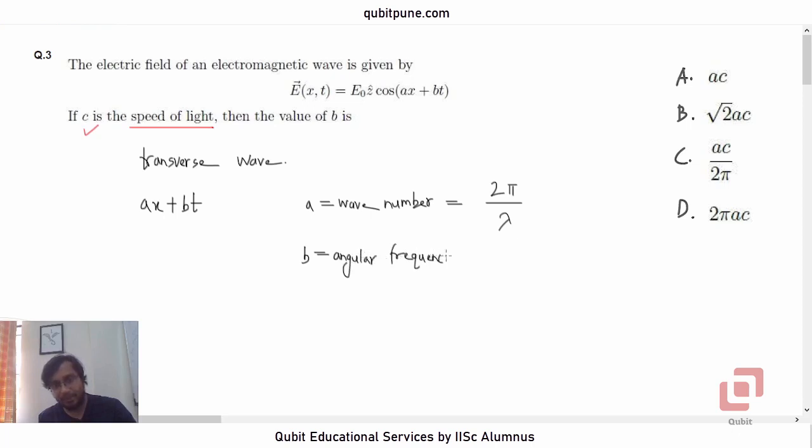Correct. A more conventional notation for b is ω, which is 2πν, where ν is the frequency of oscillation of the field in hertz.